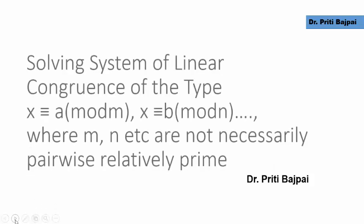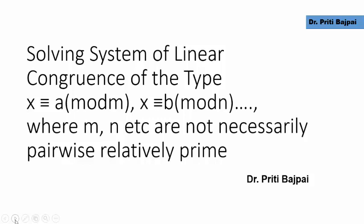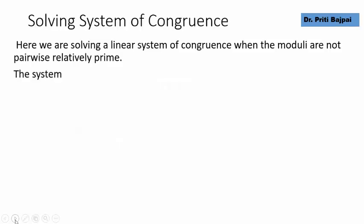Hi guys, here we are going to learn how to solve a system of linear congruences of the type x is congruent to a mod m, x is congruent to b mod n, where the moduli m, n, etc. are not necessarily relatively prime.